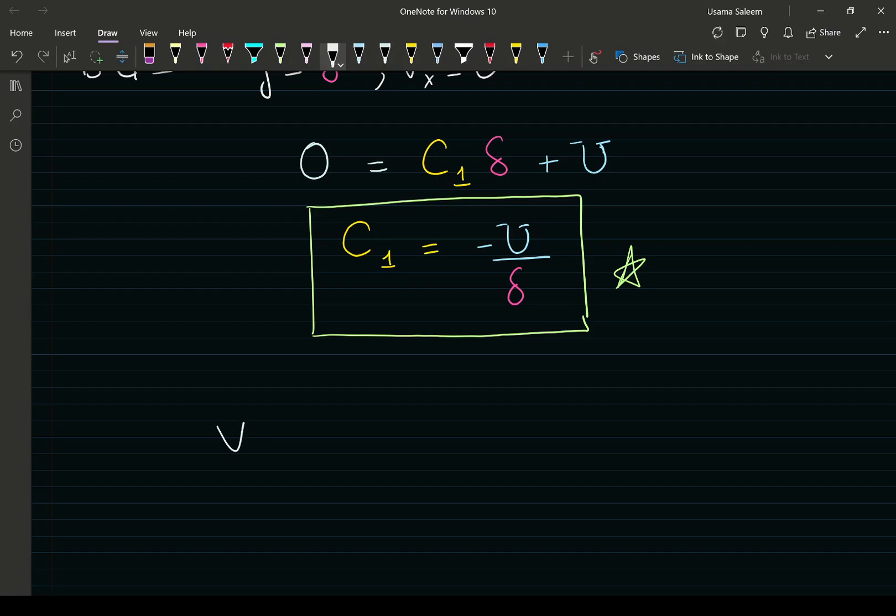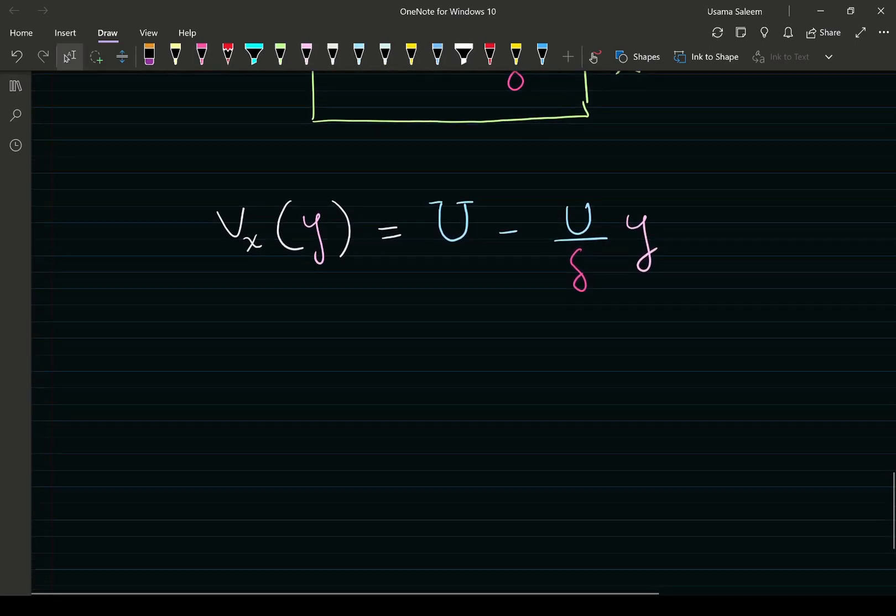Your velocity profile, the velocity in the x direction as a function of y, is going to have a linear profile. U is going to be the maximum velocity, and as you keep increasing the y direction, your velocity keeps decreasing until you hit the bottom plate. That makes intuitive sense.